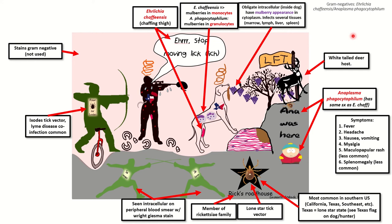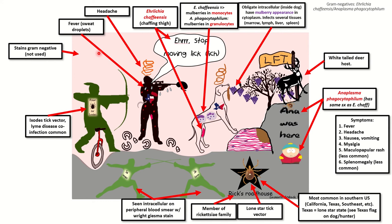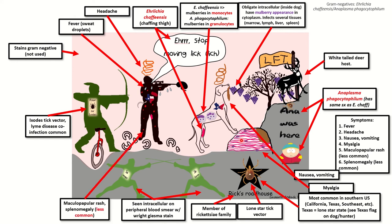Fever is represented by the sweat droplets coming off the man. Headache is represented by the little orange squiggly line on top of the head of the dog and the man. Nausea and vomiting is represented by the brownish fluid coming from the mouth of the dog. Myalgia — something that should tip you off to tick-borne illness — is represented by a stone with the appearance of skeletal muscle on H&E stain. It can cause a maculopapular rash characteristic of rickettsial diseases; because it is a vasculitis occurring at the skin, it will be blanching and palpable.